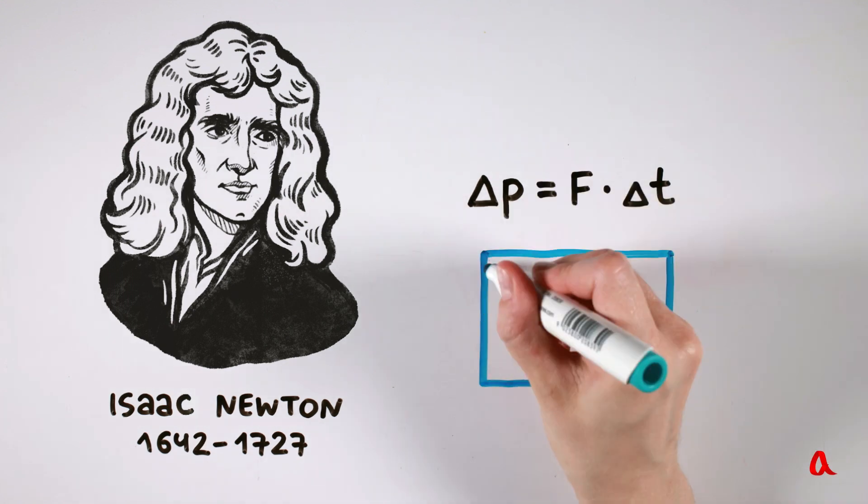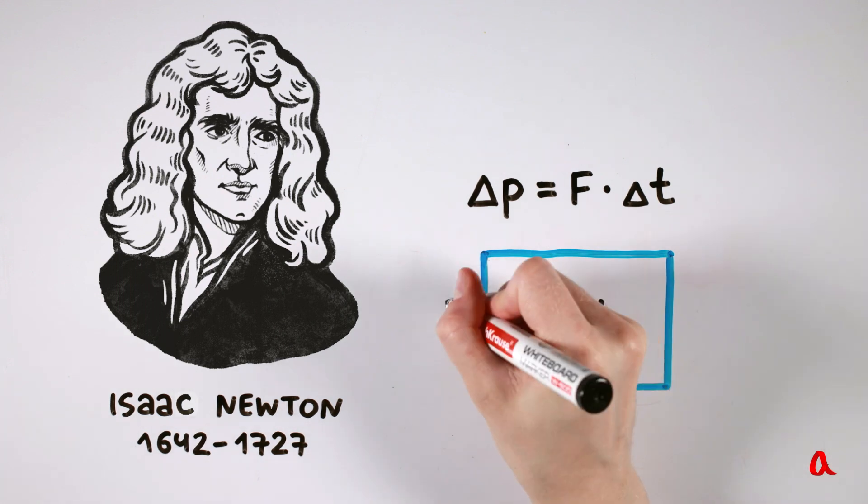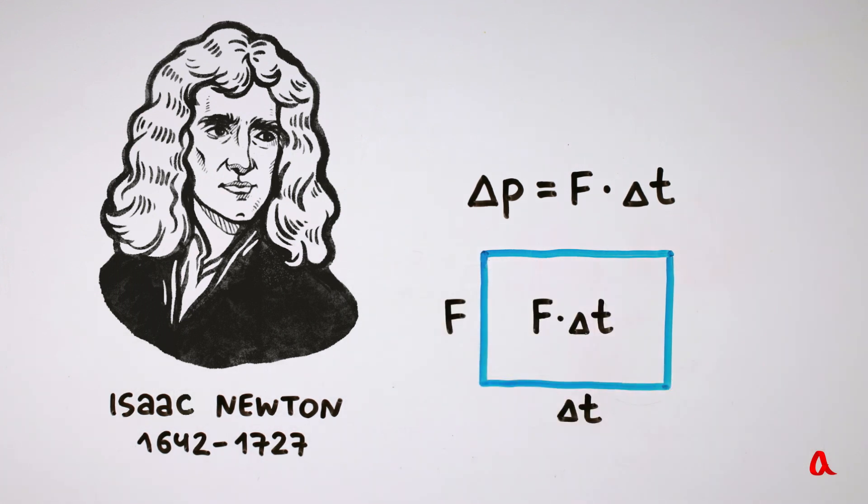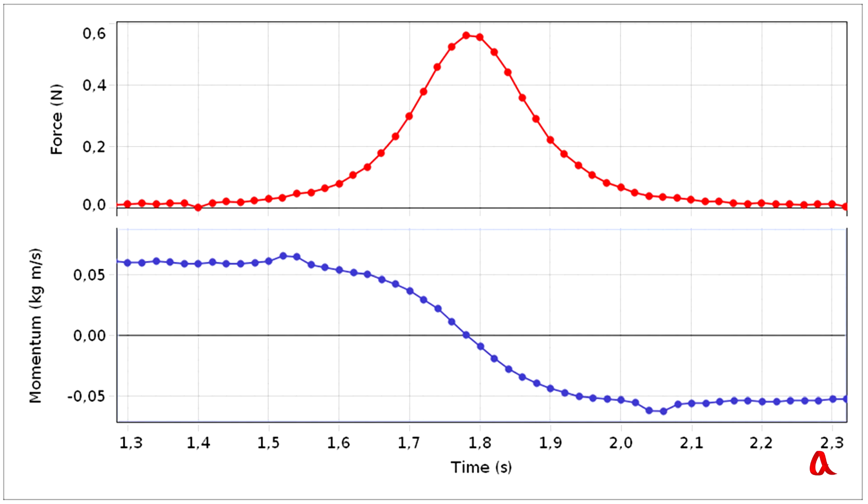If the force is constant, the change of impulse evidently equals the area under the force graph. Let's have a look at the graphs related to our experiment. The first graph shows how the collision force changed with time. The area under the force graph equals 0.13 N per second.